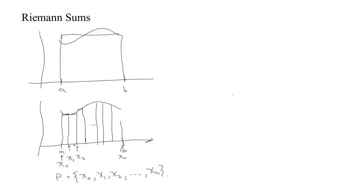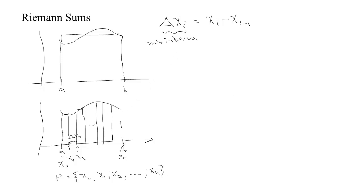Then for each sub-interval we calculate its width. For example, the width of the second sub-interval we would call delta x2. In general, delta x_i is going to be the right endpoint minus the left endpoint, which is the right endpoint of the interval before it. We call these sub-interval widths delta x_i, since we have this main interval from a to b and these are tiny intervals within it.